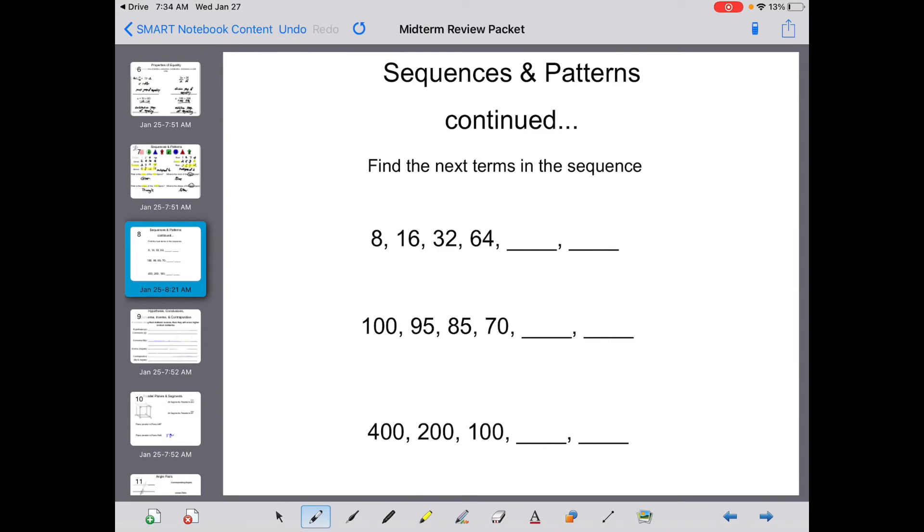Sequence and patterns continued. You can see these in your multiple choice. Here's 8 times 2 is 16. 16 times 2 is 32. 32 times 2 is 64. 64 times 2 is 128. And 128 times 2 is 256. Here you have 100 minus 5 is 95. 95 minus 10 is 85. 85 minus 15 is 70. So your pattern would continue. 70 minus 20 is 50. And 50 minus 25 is 25.